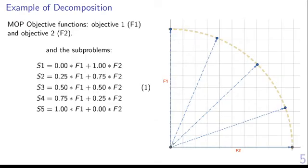Here I explain the decomposition step. We have a two-objective MOP. In this case, MOEA/D will create five subproblems. All subproblems combine F1 with F2. The difference is how they balance these objectives.